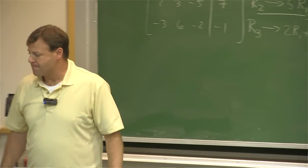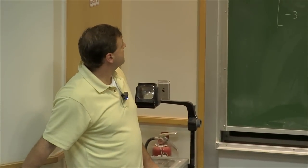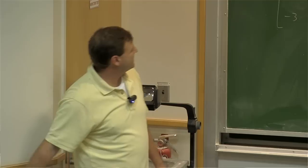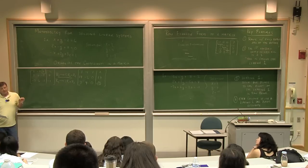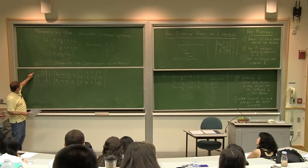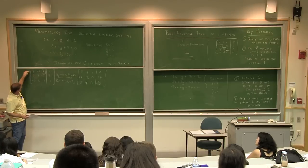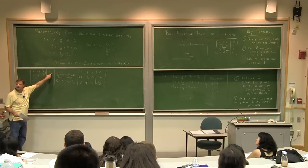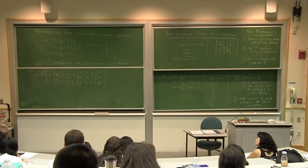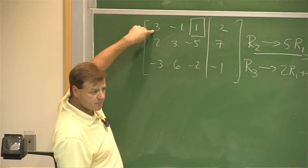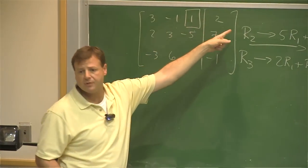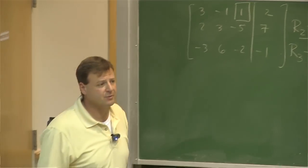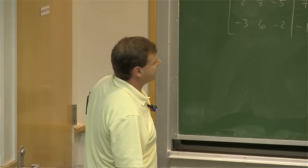A student asks: why not start by making the top-left entry a 1? Because to do that I'd have to multiply by one-third, which creates fractions here, here, and here. I don't like that. You could do it, but you'd create a bunch of fractions. Most of us try to avoid fractions unless we're some kind of fraction genius.